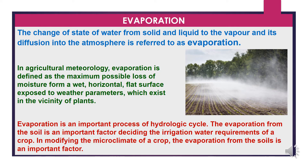Now we will discuss Evaporation. The change of state of water from solid and liquid to vapor and its diffusion into the atmosphere is referred to as Evaporation. In agricultural meteorology, evaporation is defined as the maximum possible loss of moisture from a wet, horizontal, flat surface exposed to weather parameters, which exist in the vicinity of plants.